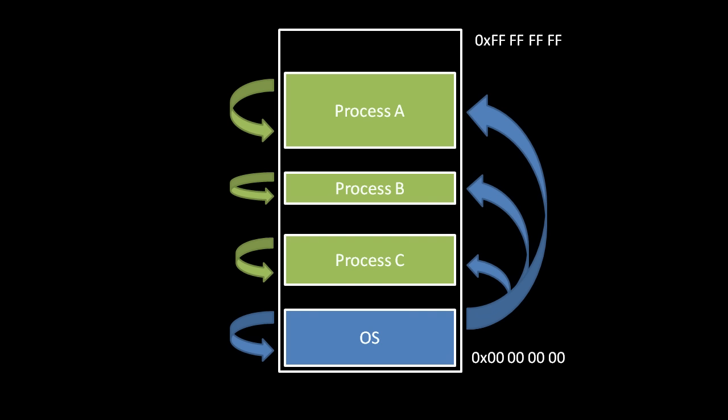Now, to understand how the CPU knows which addresses are allowed for each process, we have to first look at how a process uses memory.